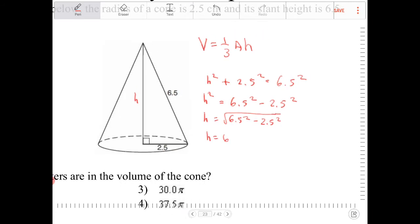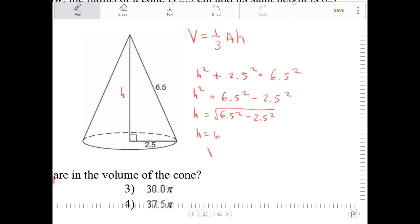So now that I know the altitude, I want to find out what the volume is. So one third, the area of the base is going to be a circle, area of a circle. So that's just pi times 2.5 squared times 6.